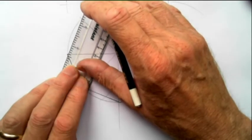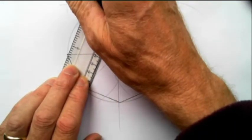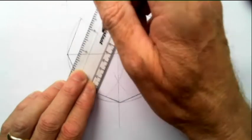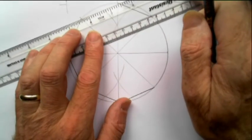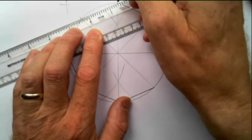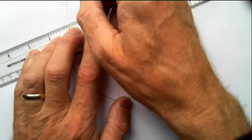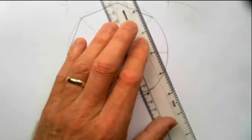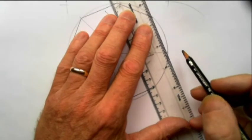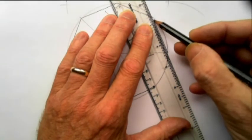All geometric constructions can be done with simply a straight edge, not even a ruler, a straight edge and a pair of compasses. Everything. Everything can be done with just those two things.